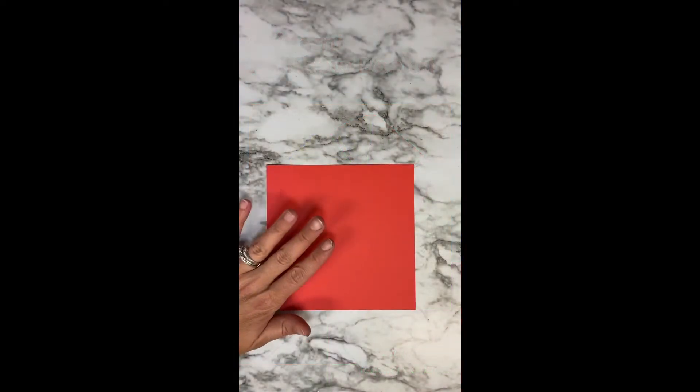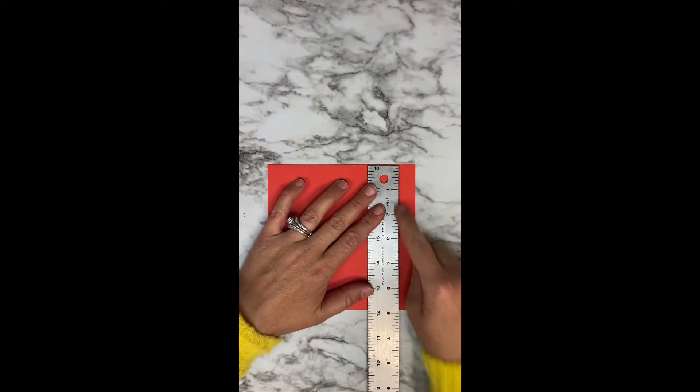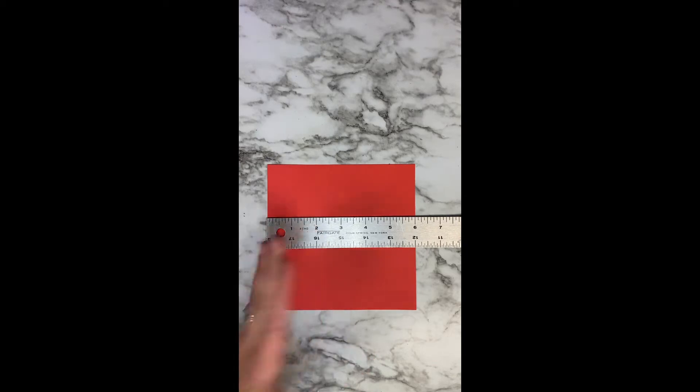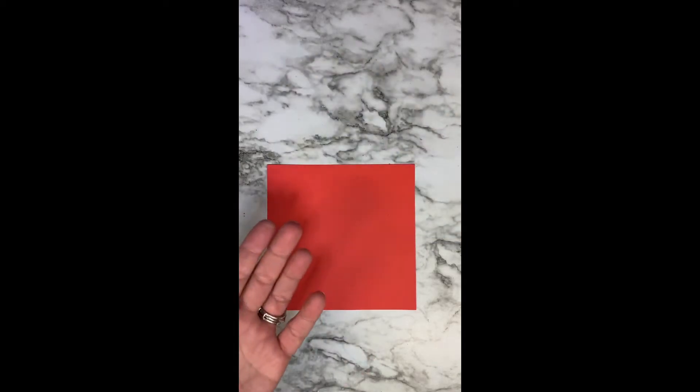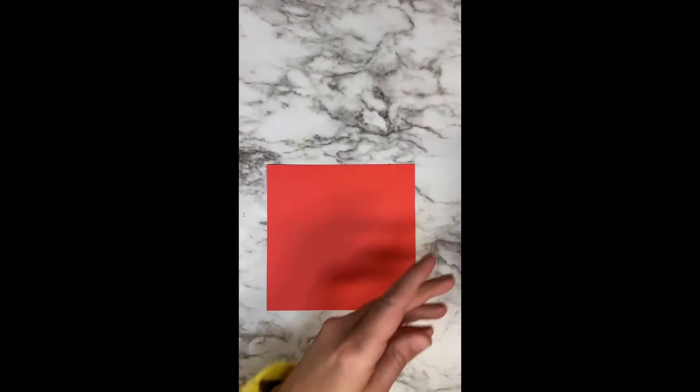I'm going to start out with rainbow colored papers that measure about six inches by six inches. The book doesn't have to be rainbow, but for this tutorial I'm making it in rainbow colors.